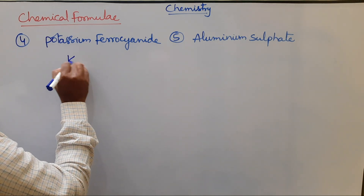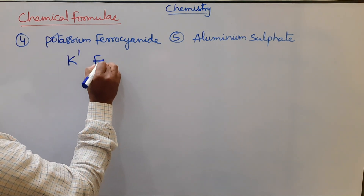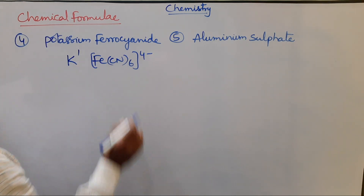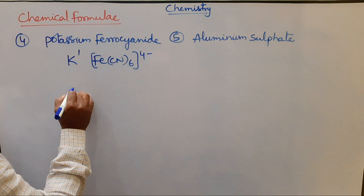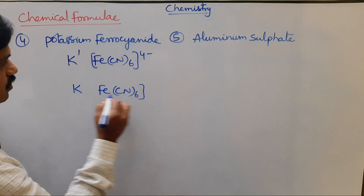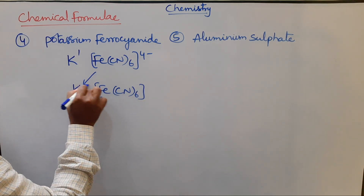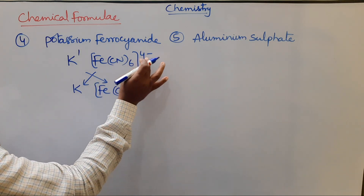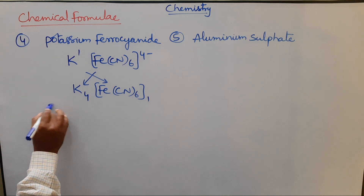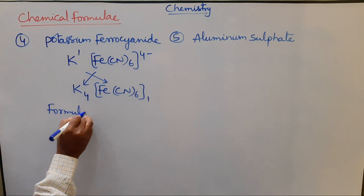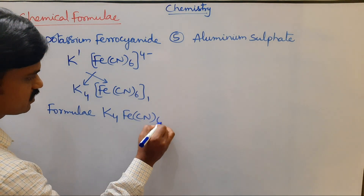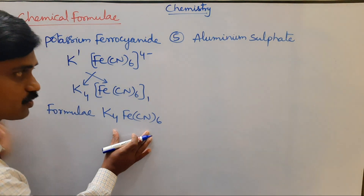Example: potassium ferrous cyanide. Potassium has valency 1, and the ferrous cyanide ion [Fe(CN)₆]⁴⁻ is a tetra-negatively charged ion. Writing K and [Fe(CN)₆], then criss-crossing charges — potassium's charge 1 and the complex ion's charge 4 — gives the formula K₄[Fe(CN)₆] for potassium ferrous cyanide.